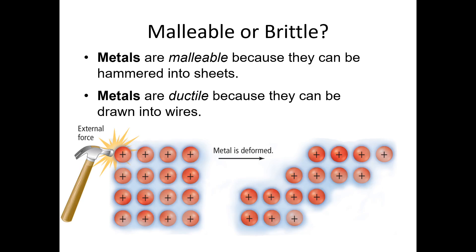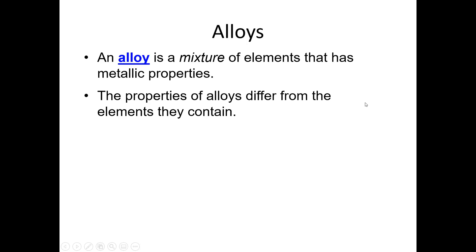Metals are described as malleable and ductile. Malleable means you can deform it — literally able to be formed by a mallet — so you can dent it, bend it, flatten it. Ductile is a similar term, referring to the ability of a metal to be drawn into wires. Lastly, we have alloys. When we form metallic bonds, we're not forming a compound — we're forming a mixture. An alloy is a mixture of elements that has metallic properties. Usually these elements are metals, but there are examples like steel where metals are mixed with non-metals, yet still form metallic properties through metallic bonding.